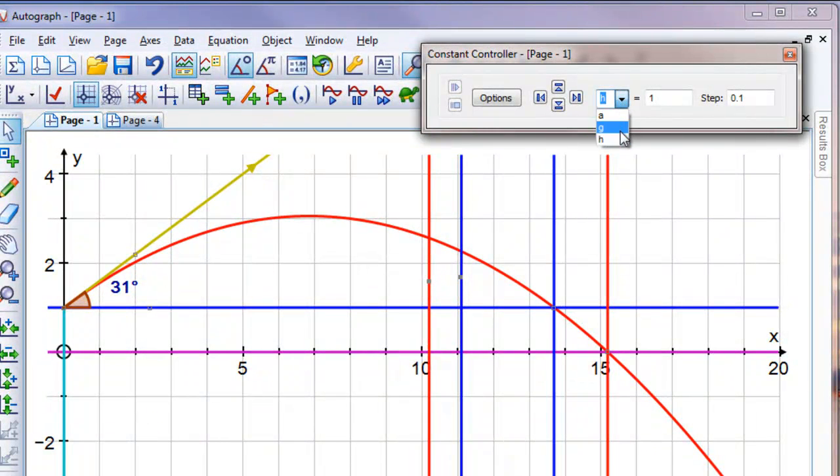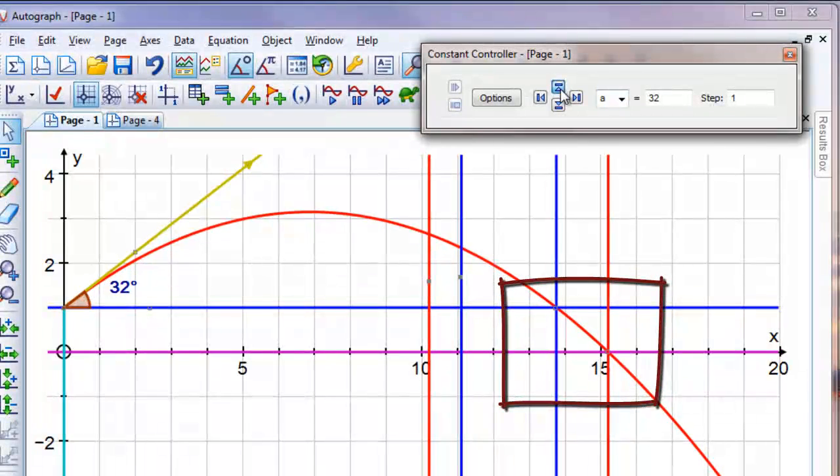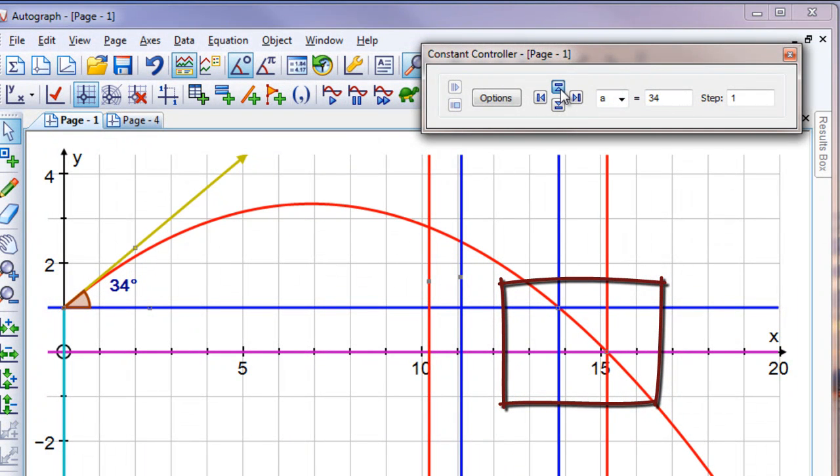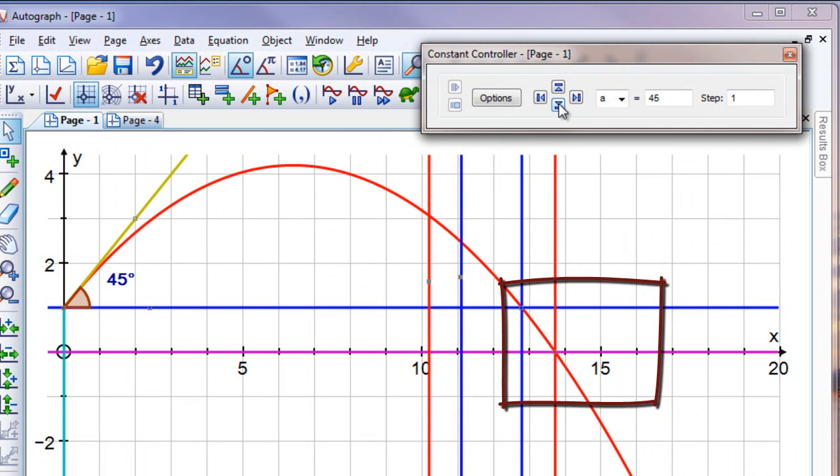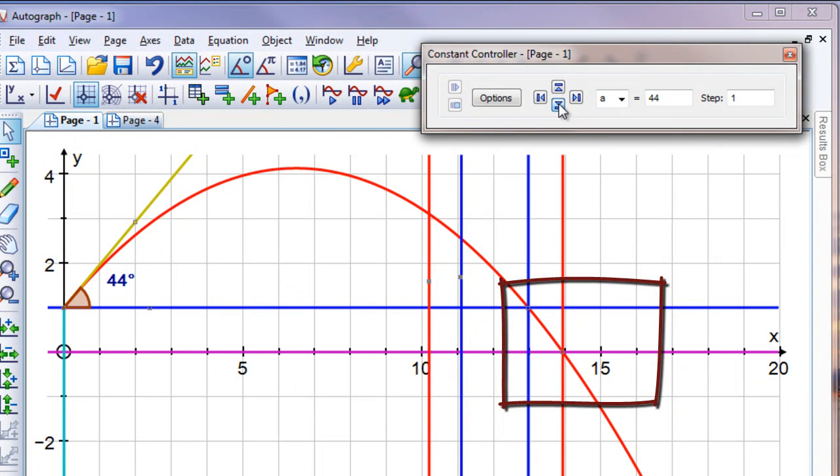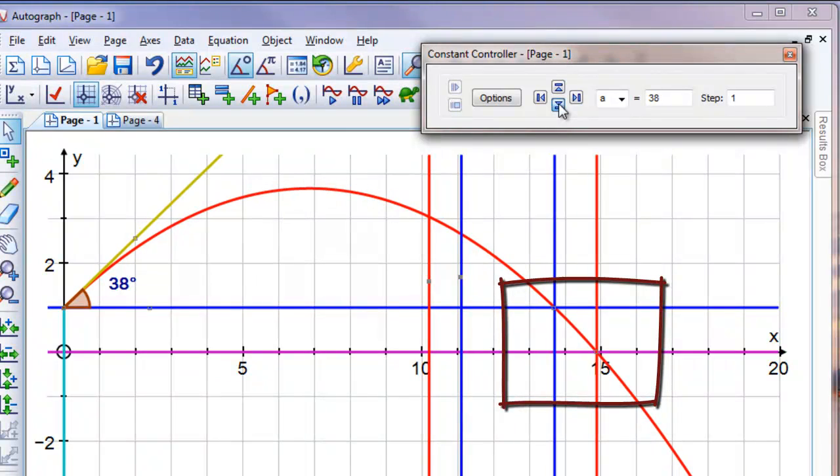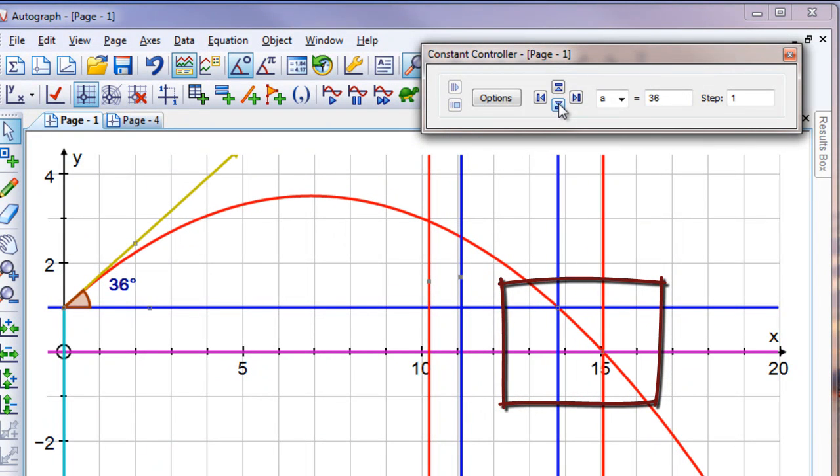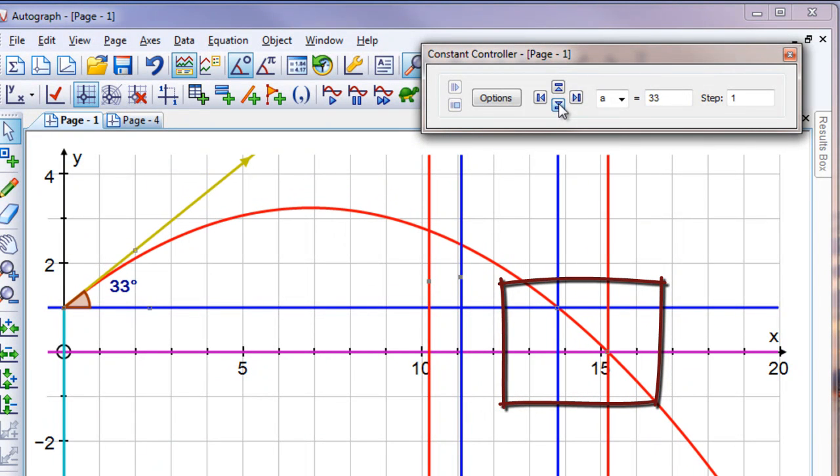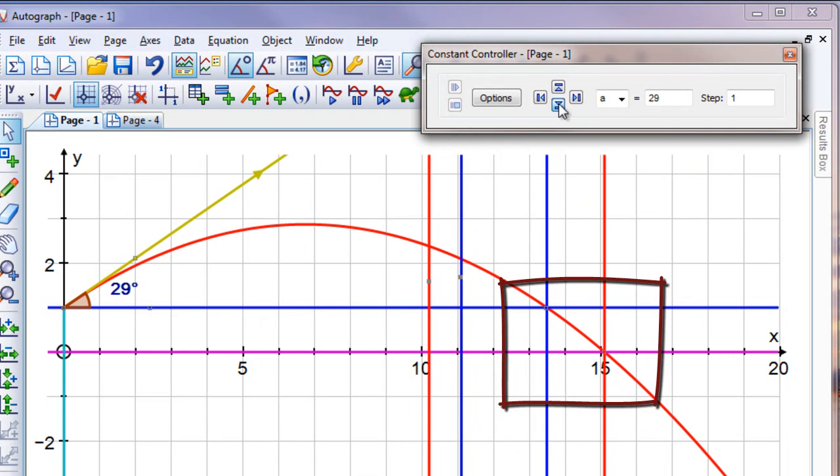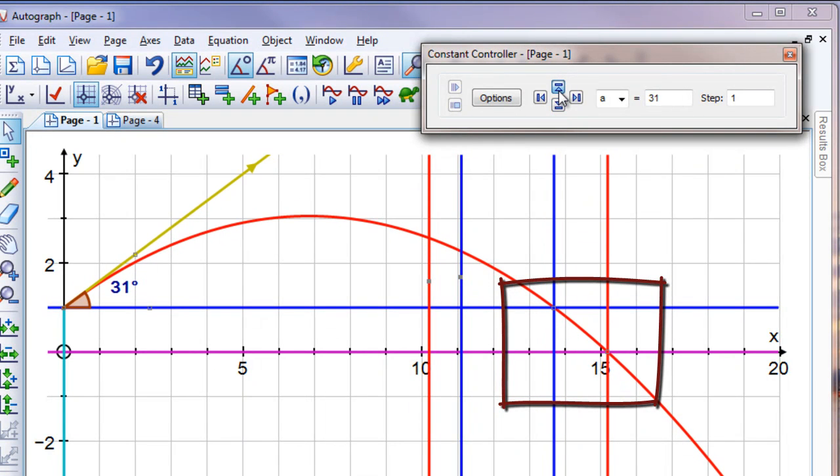We'll have a look at the constant controller now. And you see that we've no longer got v to vary, just a for angle, and see what effect this has. And clearly if you increase the angle, you're not going to throw so far. And we're looking really at the right-hand end of the lower one to see where the maximum throw is. And it looks to me it's around about 33 actually, rather than 31, gives the maximum distance.